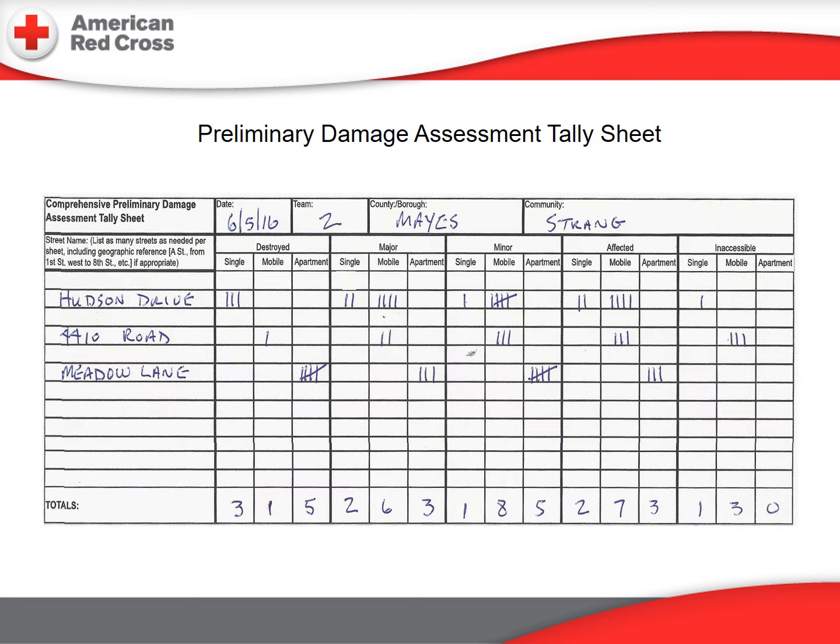A preliminary damage assessment will also normally be done in the early days of an event. The Preliminary Damage Assessment Tally Sheet is simply a method to collect broad estimates of damage over a large-scale area. A street name is entered in the first column, and hash mark counts indicate the number of homes observed.